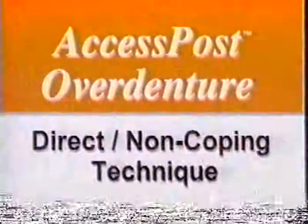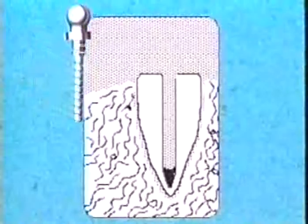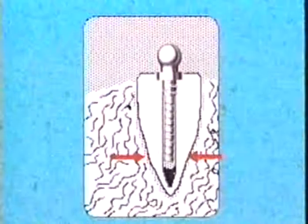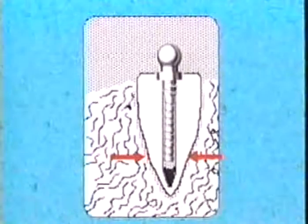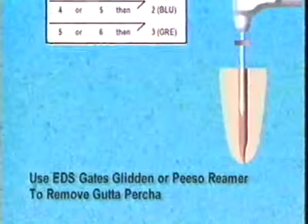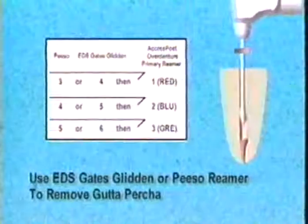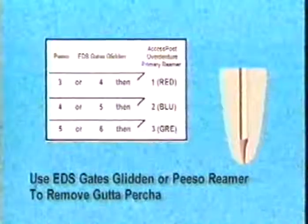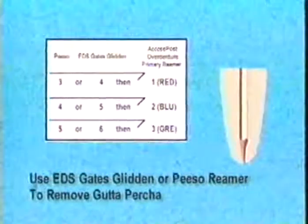Access Post Overdenture direct non-coping technique: Post selection is best done by placing a post in a hemostat and holding it over an undistorted x-ray. If there is a minimum of 0.5mm lateral root structure at the most apical placement of the post, there is sufficient root structure for placement. Once the appropriate size post has been selected, the matching EDS Gates Glidden Drill or piezo reamer is used to remove the gutta percha from the canal. A rubber stop is used to maintain the proper depth of the post hole preparation.